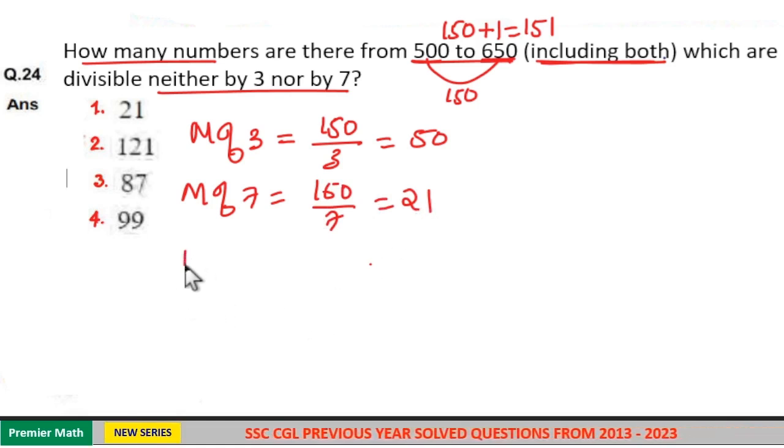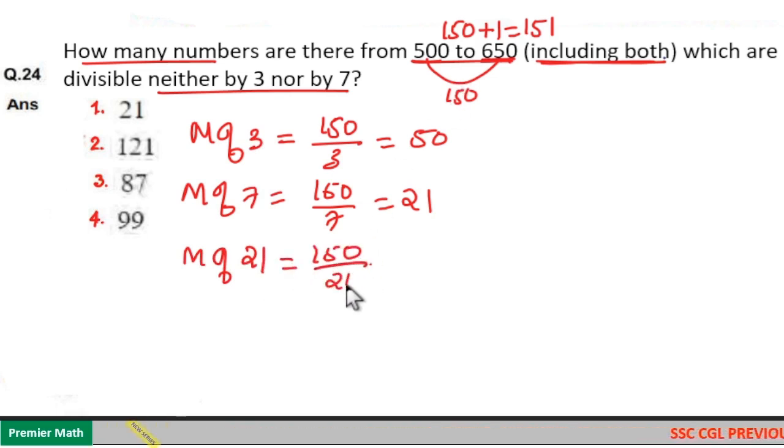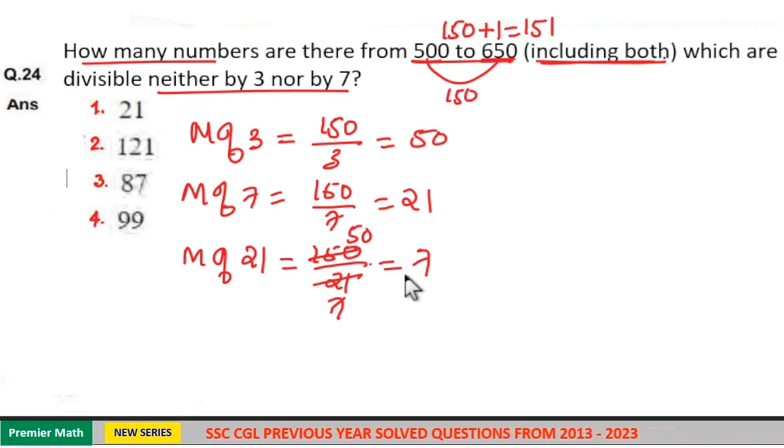Now, multiples of both 7 and 3, that is multiples of 21, which equals the difference 150 divided by 21. 3 goes 7 times in 21, 3 goes 50 times in 150, 7 goes 7 times in 50. The quotient is 7.